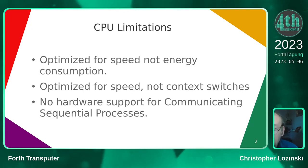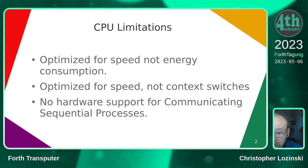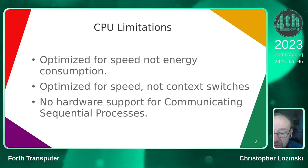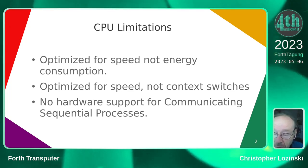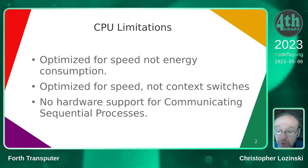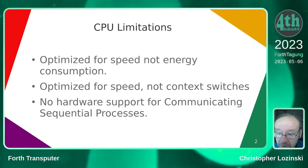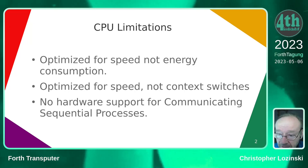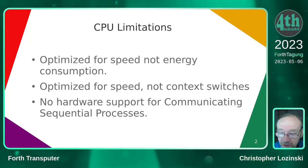I had a strong feeling that there are some limitations in the mainstream CPUs that we get. Clearly they're optimized for speed — they're not optimized for energy consumption. Reportedly, the global cloud consumes at least 10%, maybe as much as 20% of energy globally. They're also not optimized for context switches.